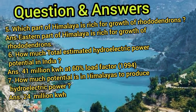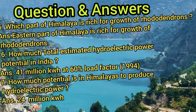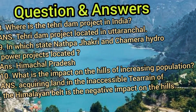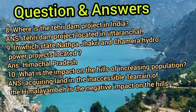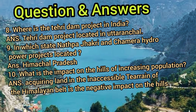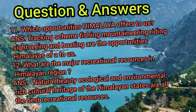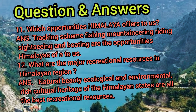What is the total estimated hydroelectric power potential in India? 41 million kW. How much potential is in the Himalayas? 24 million out of 41 million kW. Where is the Tehri Dam project? Uttaranchal. In which state are the Natpa Jhakri and Chamira hydro power projects located? Himachal Pradesh. The remaining questions about the impact of increasing population, opportunities the Himalayas offer, and major recreation resources — see yourself.